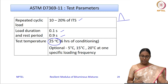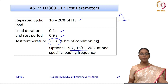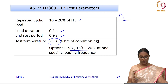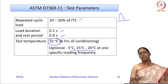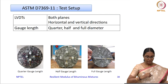The test temperature is specified as 25 degrees Celsius, though other temperatures such as 5, 15, and 20 degrees are also suggested. At every temperature, you can test at one particular frequency, say 1 hertz. The specimen must be conditioned for at least 6 hours so that the entire specimen reaches the test temperature.